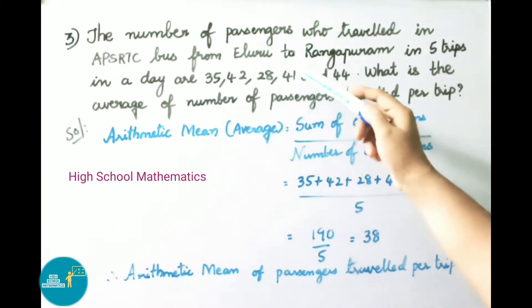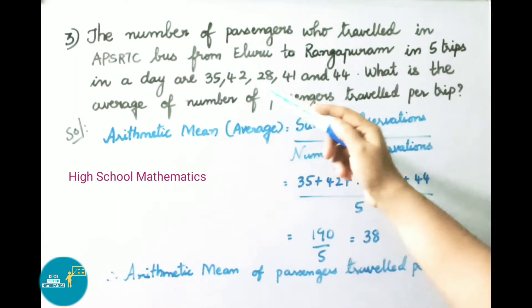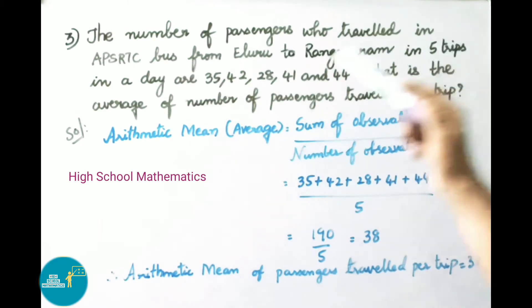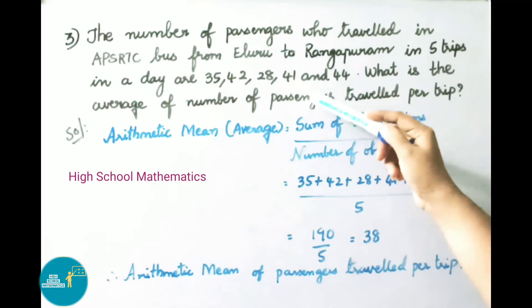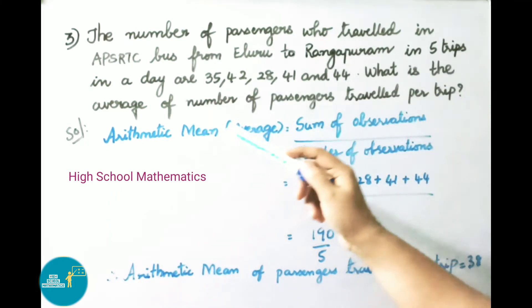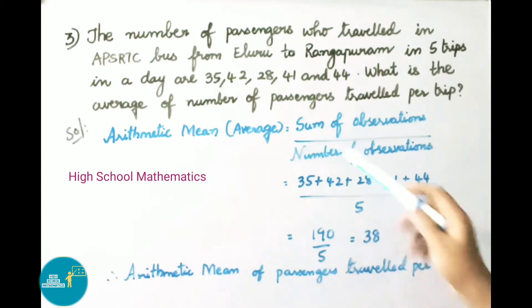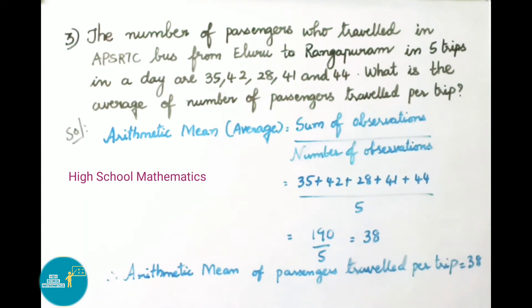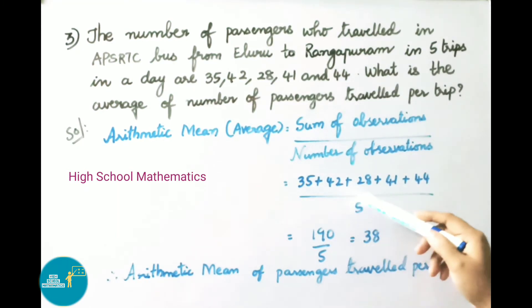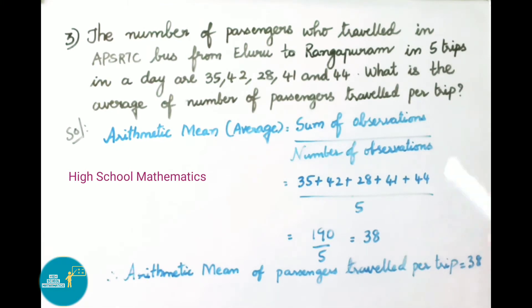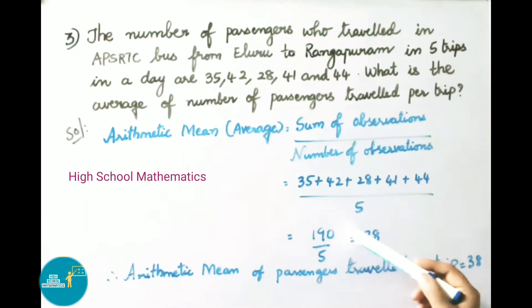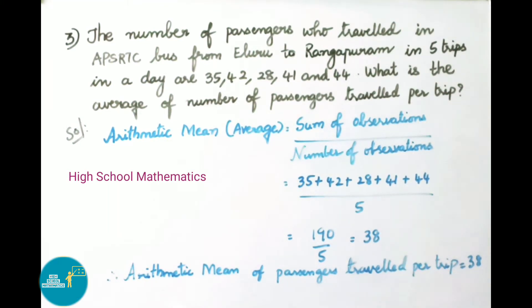Question 3: The number of passengers who traveled in APSRTC buses from Eluru to Rangapuram in 5 trips in a day are 35, 45, 42, 28, 41, and 44. What is the average number of passengers per trip? Arithmetic mean = (35 + 42 + 28 + 41 + 44) / 5 = 190 / 5 = 38.